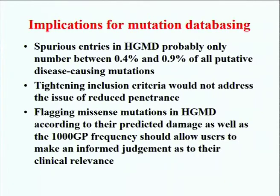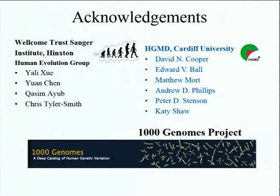What we've done instead is include links to flag up predicted damage using classic predictors of protein structure and dysfunction, and we've also included data on variant frequency within the 1,000 Genomes project. Rather than imposing a pathogenicity score on each mutation, we want to provide people with the basic information and supporting data to allow them to make informed, educated, and intelligent decisions about whether variants are of pathological significance in the context of their own study. An acknowledgement to Chris Tyler-Smith's group at the Sanger Institute, without whom this study would not have been possible.